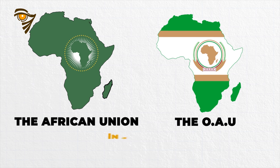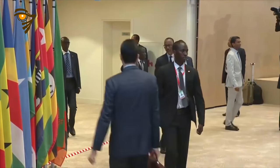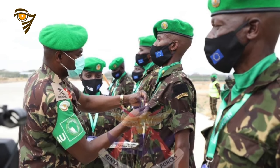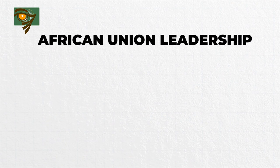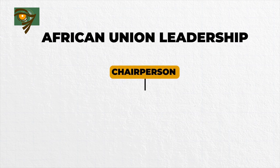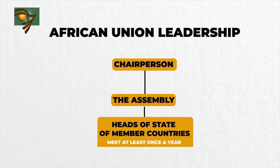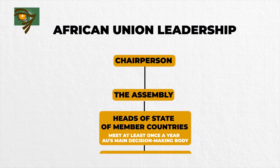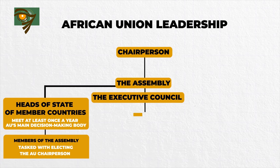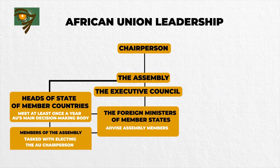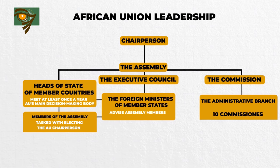After a transition period, the African Union replaced the OAU in July 2002 with 51 member states. The AU came equipped with stronger administrative mechanisms, greater powers of intervention, and an armed force equipped for humanitarian intervention. It is made up of both political and administrative bodies. The leadership consists of a chairperson, where leaders who hold office rotate on an annual basis. The Assembly comprises heads of state of member countries who meet at least once a year and is the AU's main decision-making body. Members of the Assembly are also tasked with electing the AU chairperson. The Executive Council comprises foreign ministers of member states who advise assembly members.